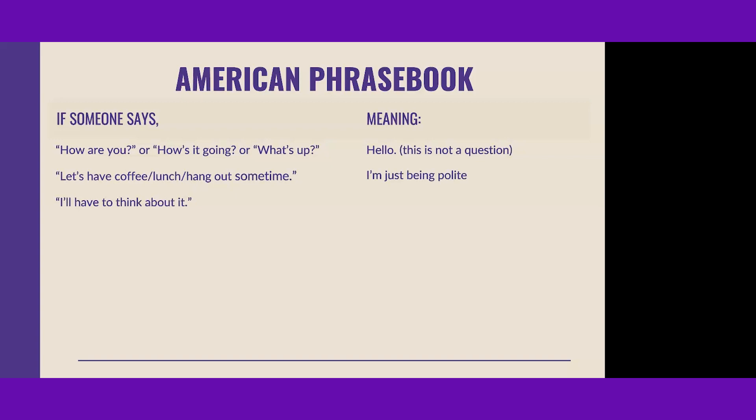Maybe you suggest hanging out and the person says, 'I'll have to think about it.' What does that mean? 'I'll have to think about it' really means: I thought about it, and the answer is no. Like, 'Will you marry me?' 'I'll have to think about it.' That means no.